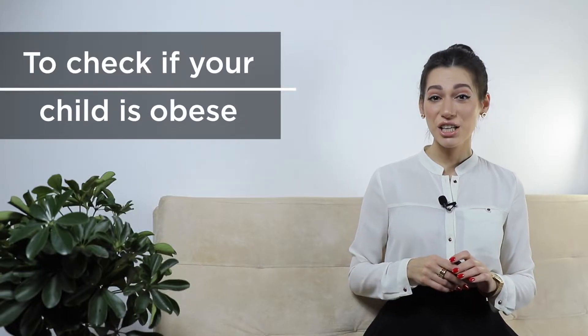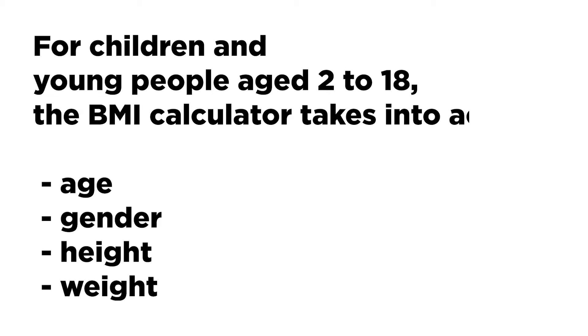To check if your child is a healthy weight, overweight, or obese, you can use Body Mass Index. For children and young people aged 2 to 18, the BMI calculator takes into account age and gender, as well as height and weight.